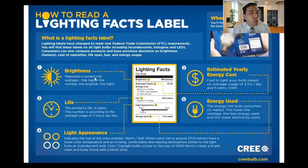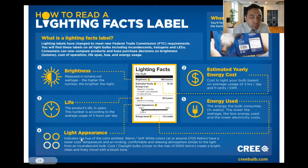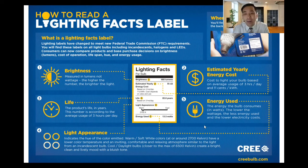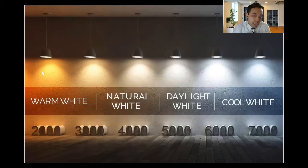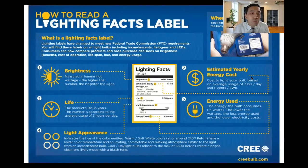Brightness is measured in lumens, not wattage — that's how bright it is. When it comes to light appearance, it indicates the hue of the color emitted. Warm, soft colors are around 3000K. The lower the number, the more yellow it is; the higher the number, the cooler the light. When picking the right one, you want to look at the light appearance scale showing warm versus cool.